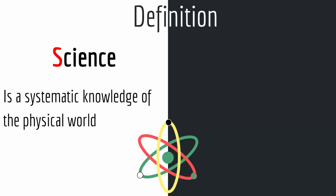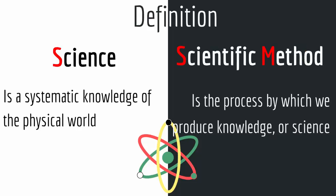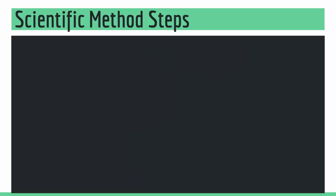But how do we produce science, or how do we come about getting science? We do that through something called the scientific method. Scientific method is a process by which we produce knowledge or science. So let's talk about the topic of this lecture: what are the steps that go into finding or producing knowledge through scientific method?